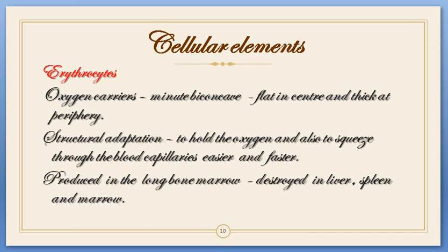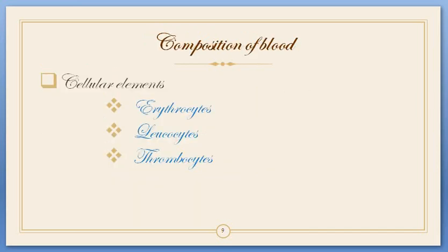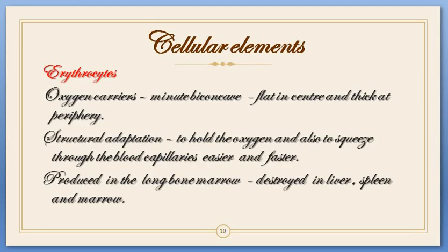In cellular elements there are three different kinds: erythrocytes, leukocytes, and thrombocytes. Erythrocytes are nothing but red blood corpuscles, or RBC. Leukocytes are WBC or white blood corpuscles. And thrombocytes are the blood platelets. First we are going to learn in detail about the erythrocytes.